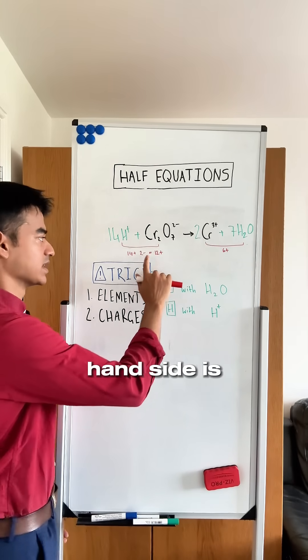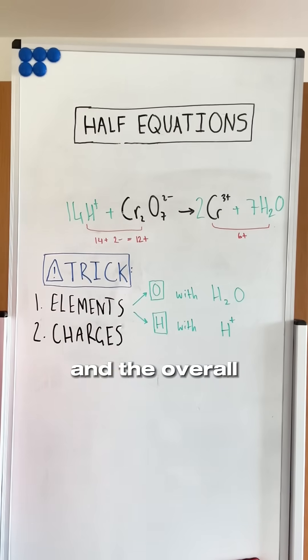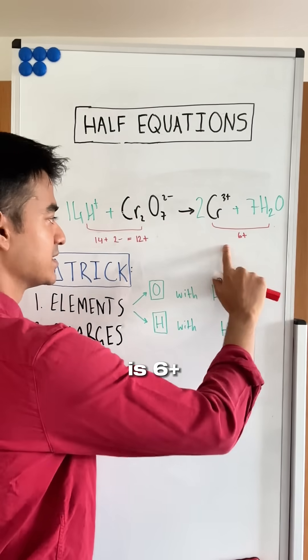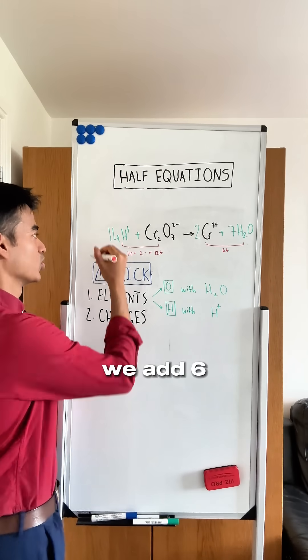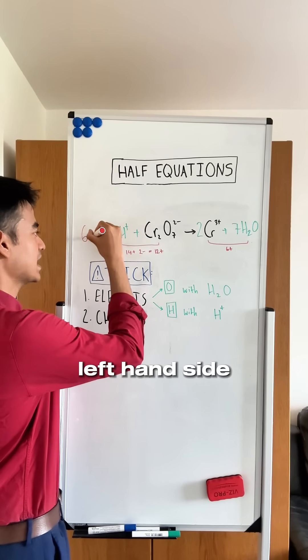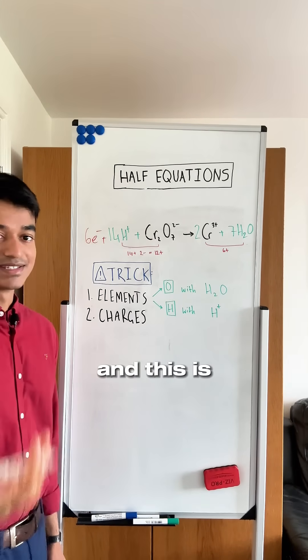The overall charge of the left-hand side is 12 plus, and the overall charge of the right-hand side is 6 plus. To balance these, we add 6 electrons to the left-hand side, and this is now balanced.